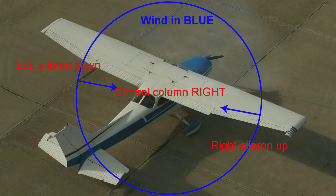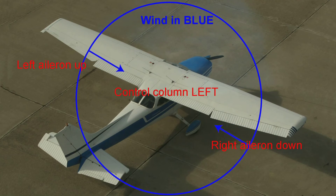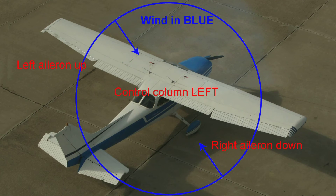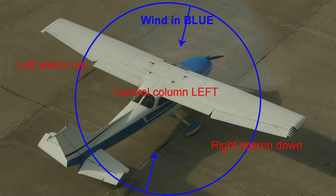The wind continues to come around. As the wind passes your wingtip — either wingtip — the controls are going to flip again. So we're back to the original position with the wind in front to the left or behind to the right: left aileron up, right aileron down, and so it goes.